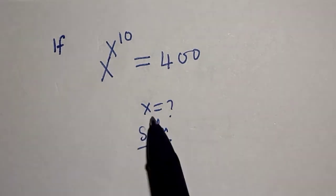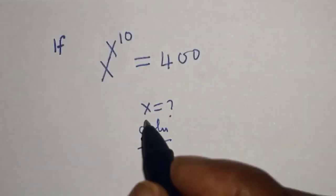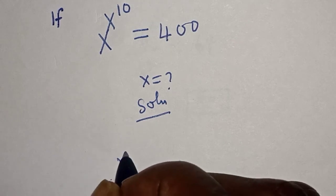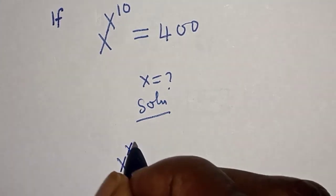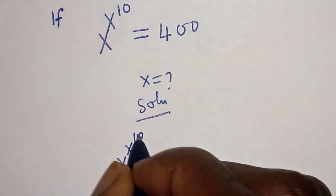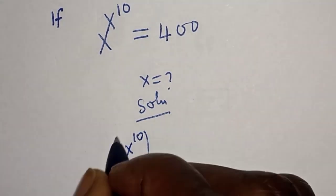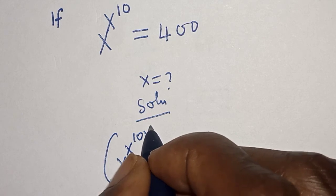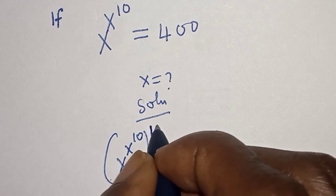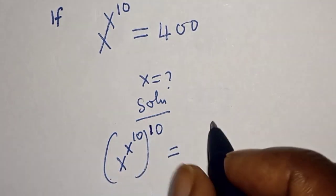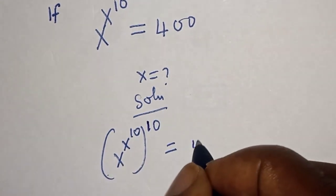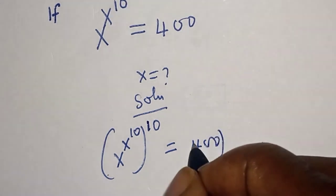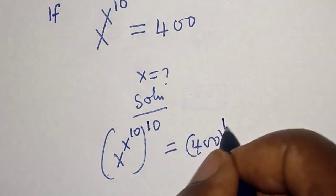Let's take the power of both sides by 10. That is: s raised to power s raised to power 10, all raised to power 10, is equal to 400 to the power of 10.